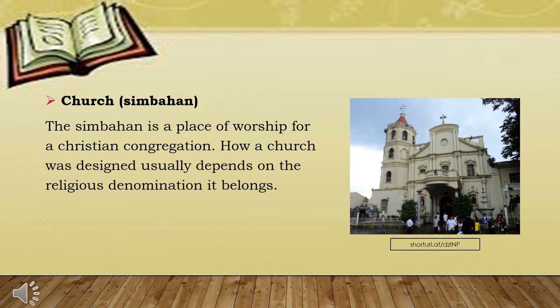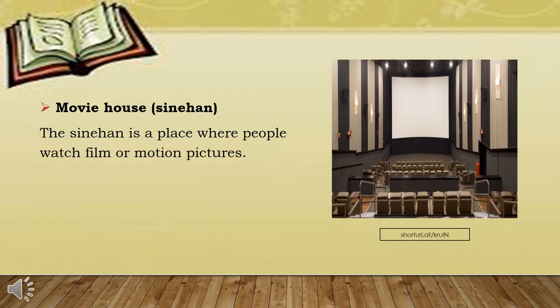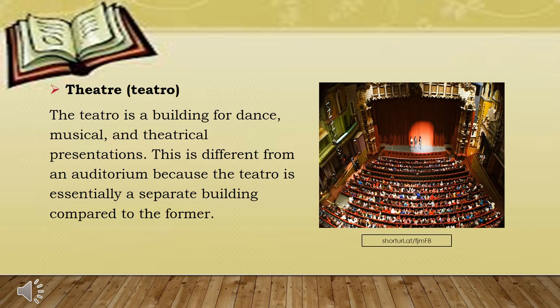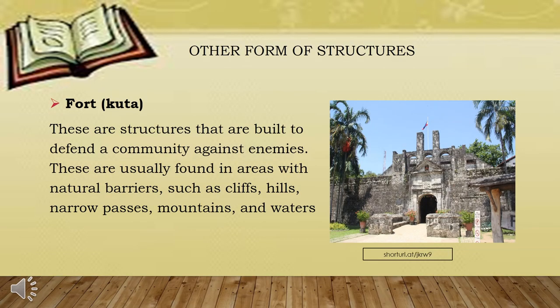Next is church or simbahan. The simbahan is a place of worship for a Christian congregation. How a church was designed usually depends on the religious denomination it belongs to. Movie house or cinehan. The cinehan is a place where people watch film or motion pictures. Theater or teatro. The teatro is a building for dance, musical, and theatrical presentations. This is different from an auditorium because the teatro is essentially a separate building.